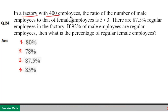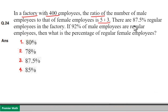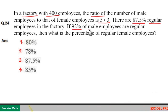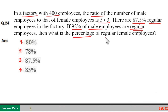In a factory with 400 employees, the ratio of male employees to female employees is 5:3. There are 87.5% regular employees in the factory. If 92% of the male employees are regular, then what is the percentage of regular female employees?